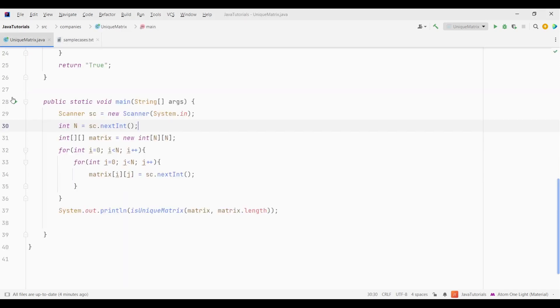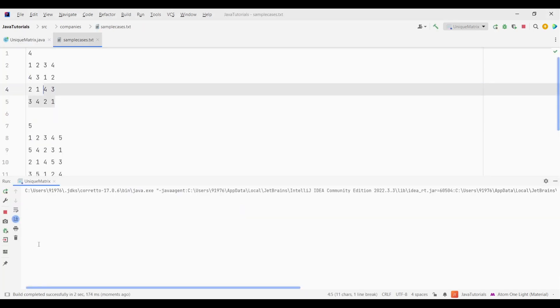Now let's execute our code using the first sample case. In this case our code gave the output as true which means that our matrix is a unique matrix.